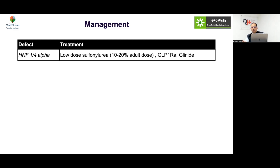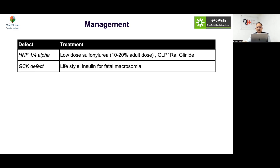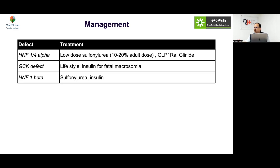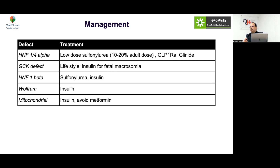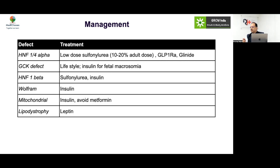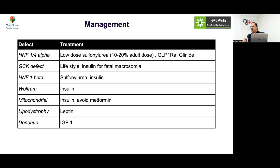To summarize management: HNF1 and 4 alpha are exclusively sensitive to sulfonylureas — give a low dose; GLP-1 receptor analogs and glinides are also options. GCK defect: lifestyle measures; insulin only if fetal macrosomia is a concern. HNF1 beta: initially sulfonylurea, then insulin as response wanes. Wolfram: insulin is required. Mitochondrial diabetes: never give metformin; use insulin. Lipodystrophy: leptin therapy. Severe insulin resistance: alternate pathway medications.